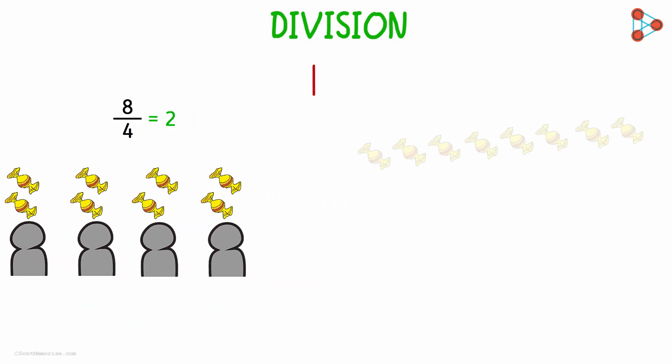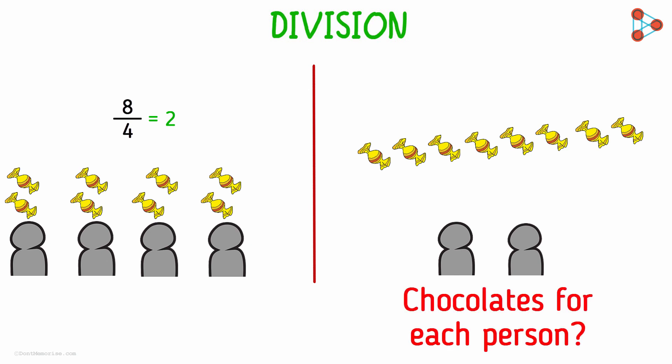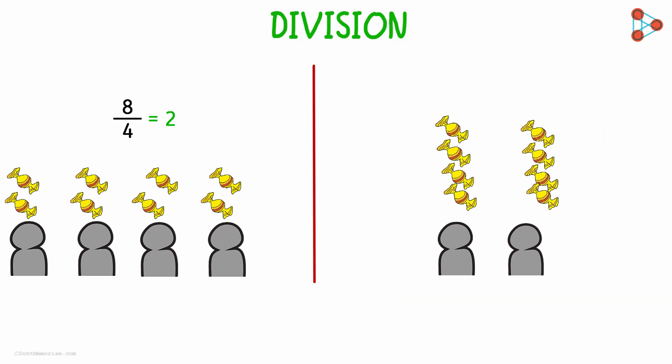Now let's say instead of 4, there are 2 people now. How will we divide 8 chocolates between 2 people? How many chocolates will each person get? You are absolutely correct! Each one will get 4 chocolates.